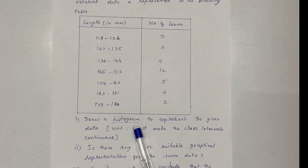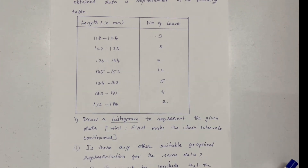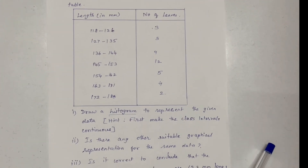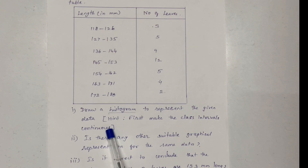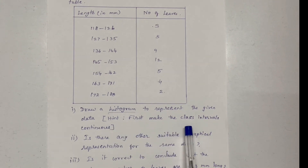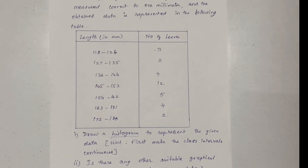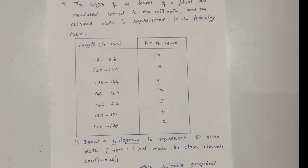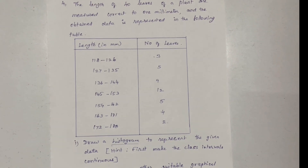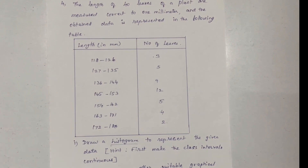Draw a histogram to represent the given data. Hint: first make the class intervals continuous. We are going to check this out and see how it is continuous. The histogram introduction shows whether the intervals are continuous or discontinuous.